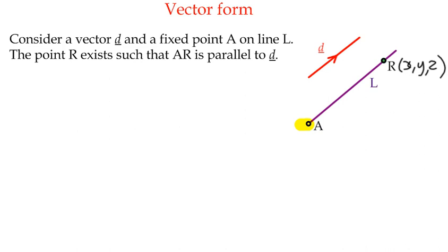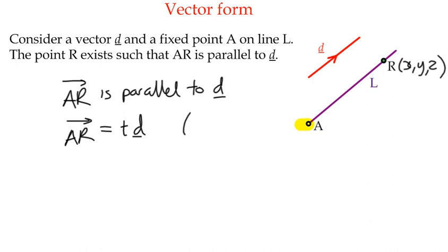So what can we say here? What we can say here is that we've got point A and R. So the vector AR, A to R, is parallel to some direction vector D, which means that AR must be a multiple of direction vector D. We call that a parameter.